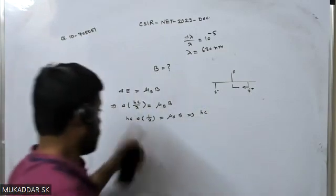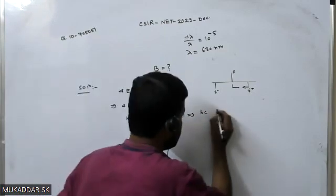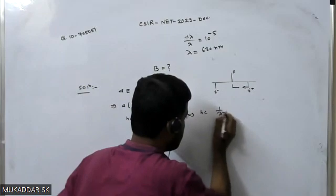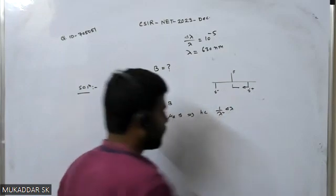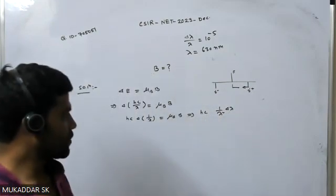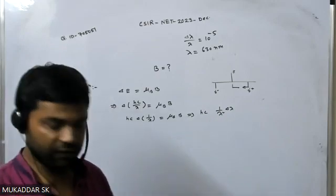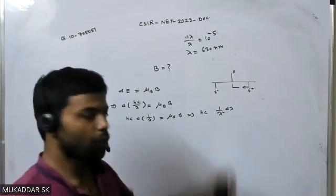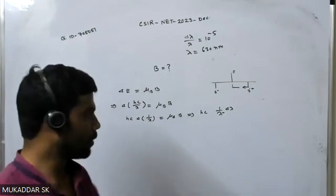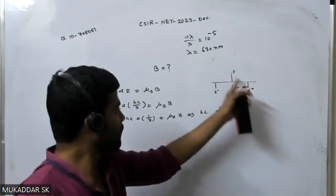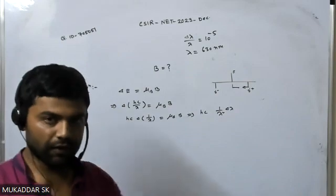Now hc then delta 1 by lambda, that will be 1 by lambda square delta lambda. I have to take that value of magnitude because I'm going to investigate the shift in the wavelength.